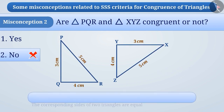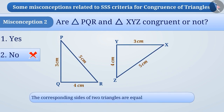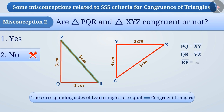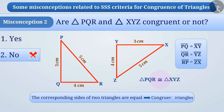The correct understanding is that when the corresponding sides of two triangles are equal, they are congruent under the SSS criterion. Here, in triangle PQR and triangle XYZ, PQ equals XY, QR equals YZ, and RP equals ZX. The corresponding sides of both triangles are equal, so they are congruent. Hence, option 1 is the correct answer.